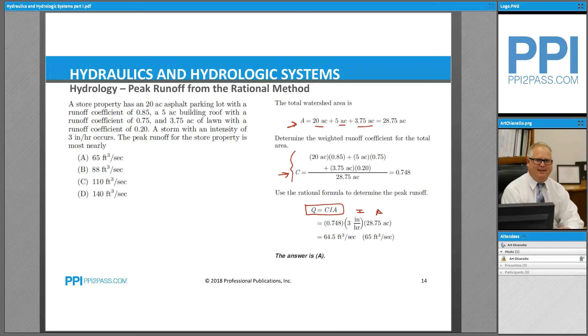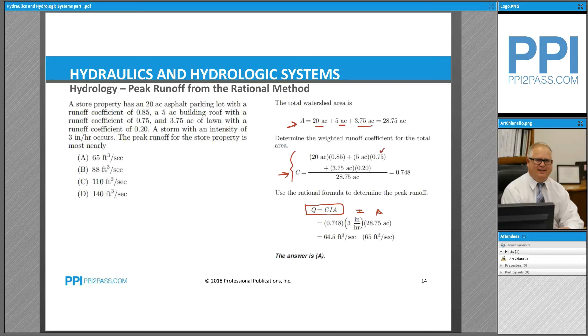...plus 5 acres of building roof multiplied by its runoff coefficient, and then finally 3.75 acres of lawn with its runoff coefficient of 0.20.